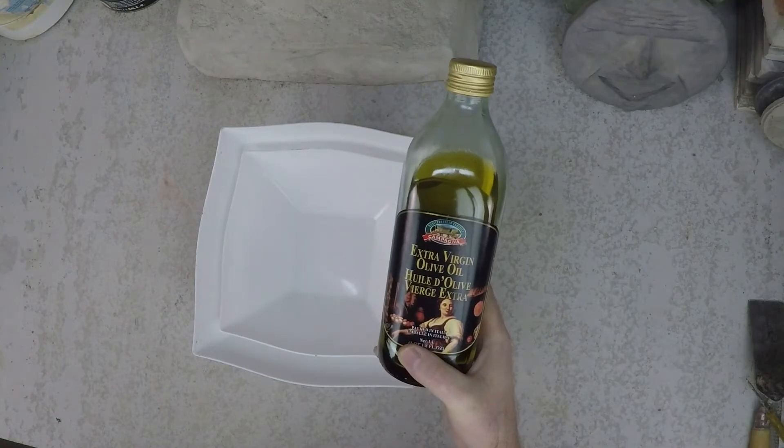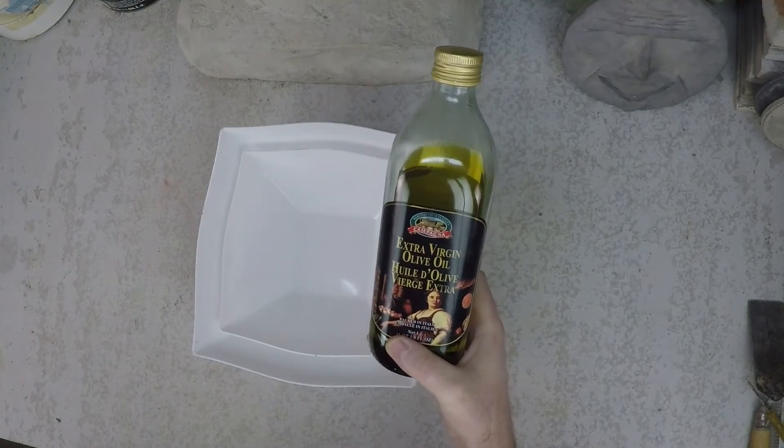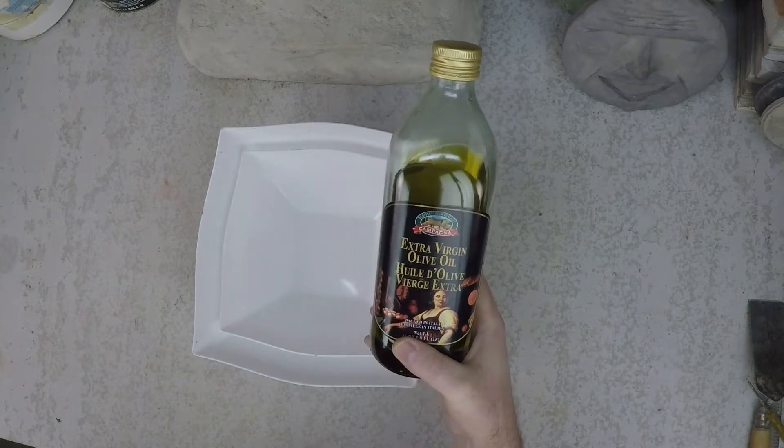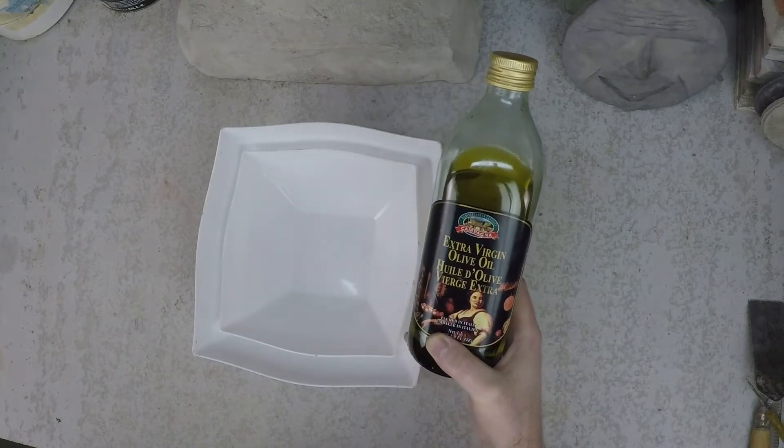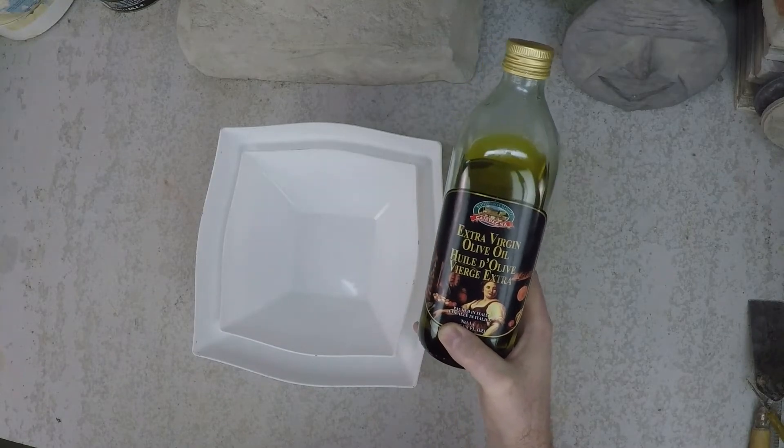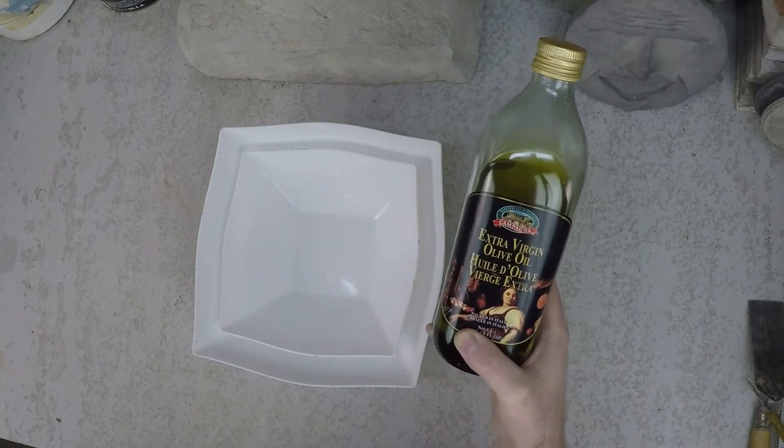Olive oil is another option that you could use for a mold release. It's thick, which is good, but it's not ideal because it's going to leave an oily residual on your mold. Also, your spouse is going to get mad at you that you have their olive oil in the garage.